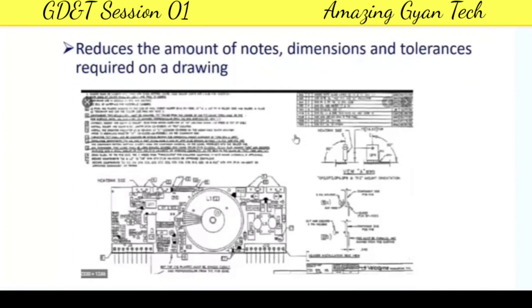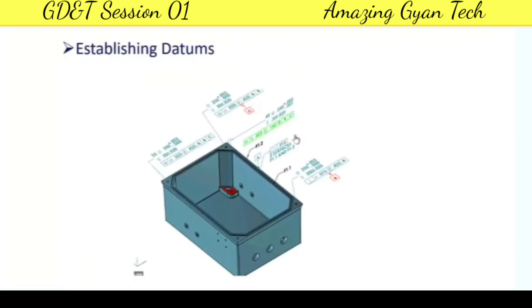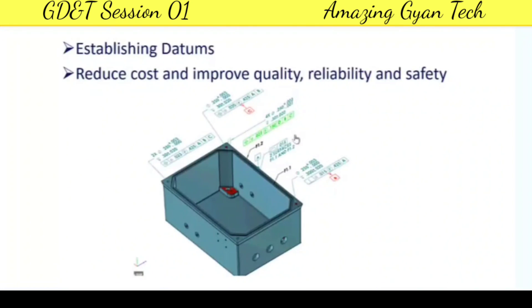Wherever required, dimensions and required tolerances can be applied. Another benefit is establishing datums — reference positions or reference planes from which you can dimension other features. You can determine where datums are needed and specify them in the drawing using GD&T. It also reduces cost and improves quality, reliability, and safety, ensuring the part is manufactured to requirement without rejections from the first time, and that every time you get the same size, shape, function, and features.